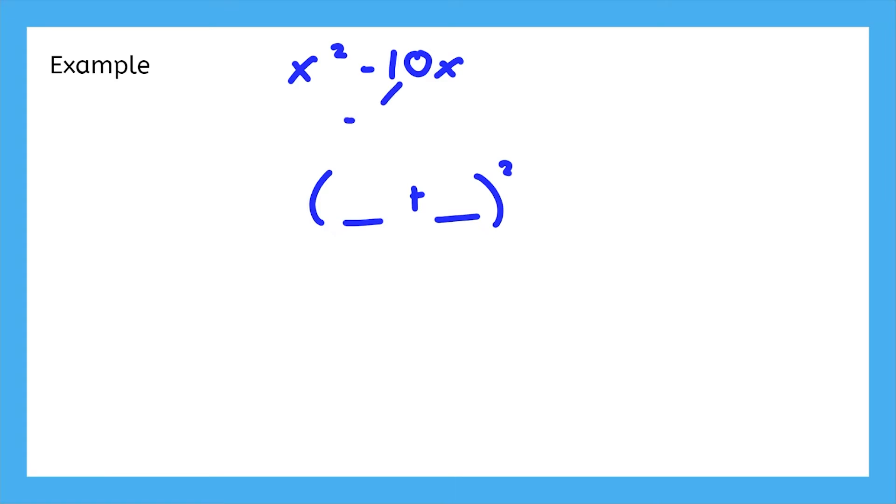In this case, it would be negative 5 and negative 5. The number we need to add is these multiplied together. And negative 5 times negative 5 makes positive 25.